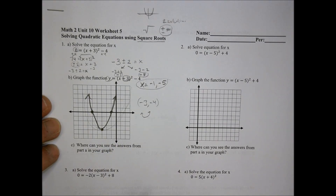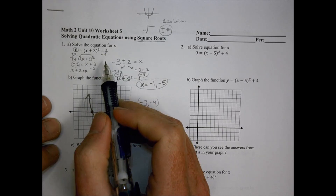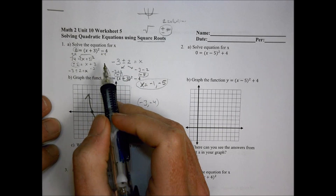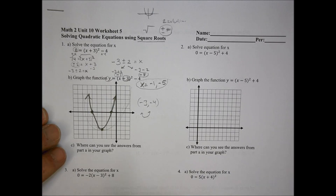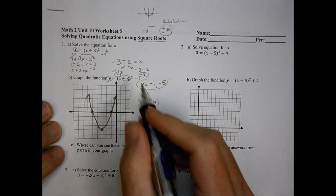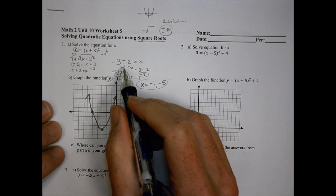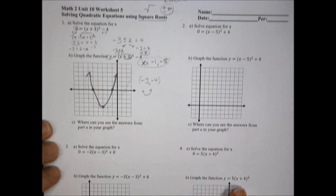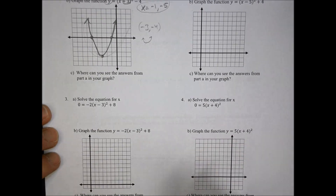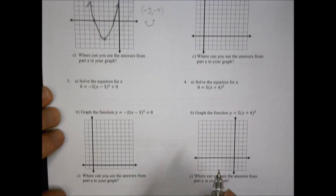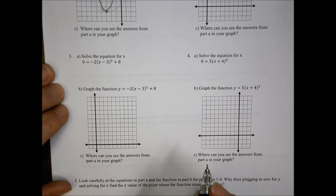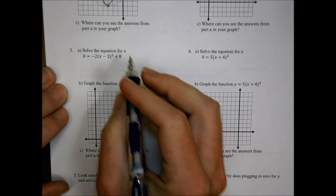Because we're solving with square roots, we end up with two solutions, which is why we have two numbers — they become two x-intercepts on the graph. Let's look at number three together using the same idea: solve the equation, then graph it and see what we notice.